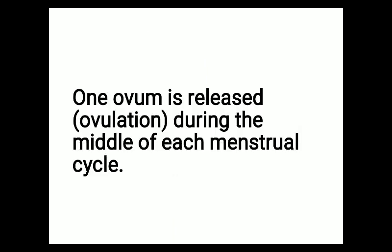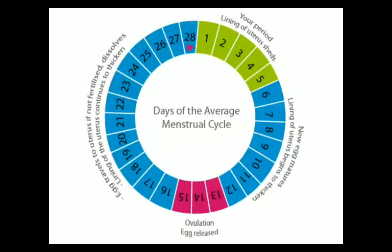One ovum is released during the middle of each menstrual cycle. The process by which the ovum is released is known as ovulation. If the reproductive cycle is around 28 days, the middle is at day 14, so the ovum is released at day 14. If the cycle is 26 days, the ovum is released at day 13.